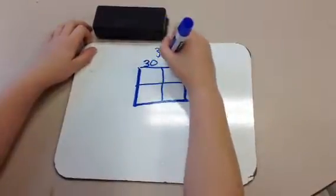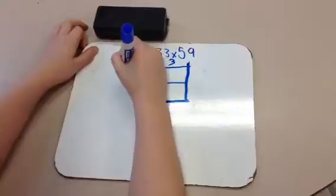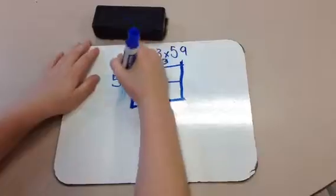I'll break 33 up into 30 and 3, and 59 into 50 and 9.